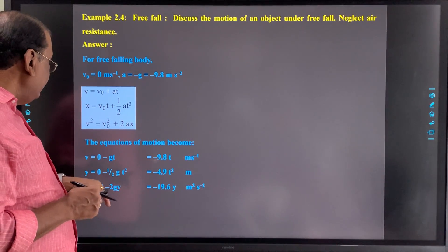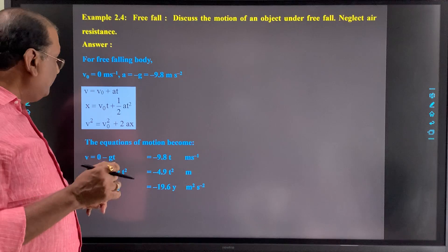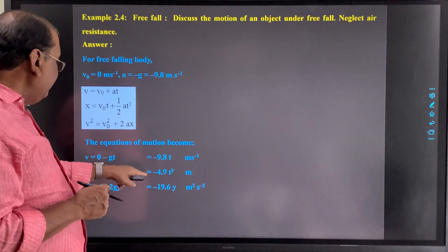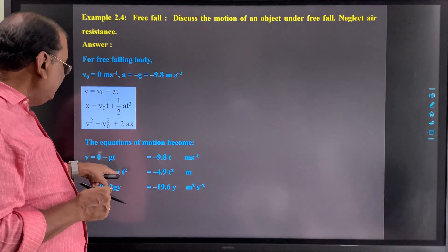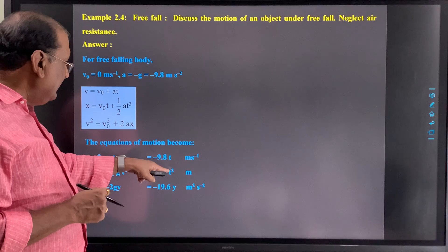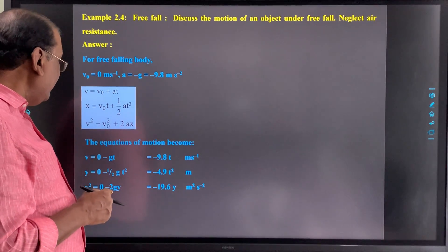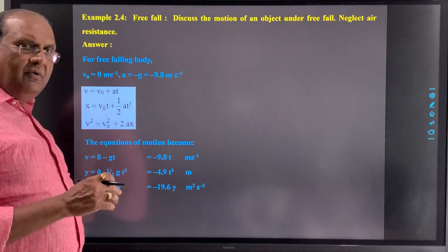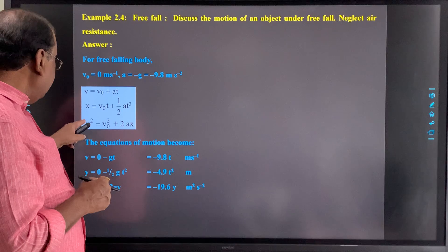g that is 9.8, so we will get 1 by 2 into 9.8, that is 4.9t square. So minus 4.9t square, that is your y, second equation.